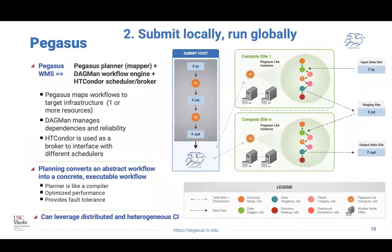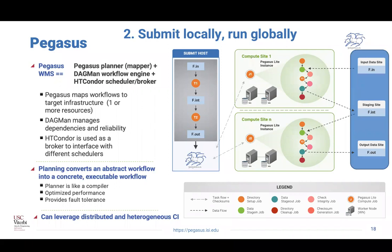The second principle is submit locally and run globally. We have a submit host where the workflow management system lives, and from there you submit jobs to one or more compute resources. We also have a notion of data staging sites that can be separate from the overall infrastructure. This allows us to model not only HPC systems where storage is co-located with the compute site, but also cloud resources and edge resources where there is a separation of storage and compute.